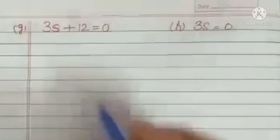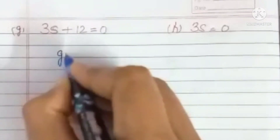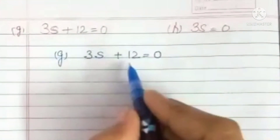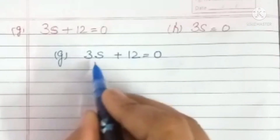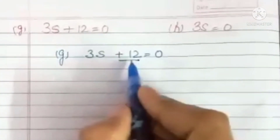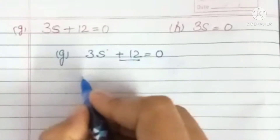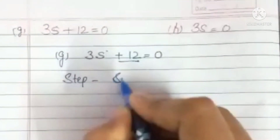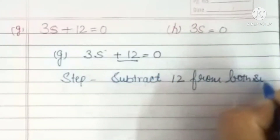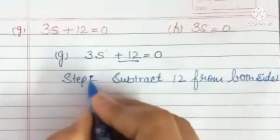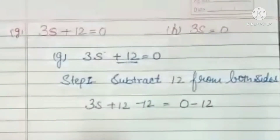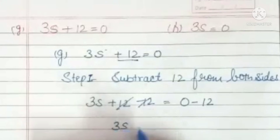Our next part is 3s plus 12 is equal to 0. We need to remove this 3 and this 12. Firstly we will remove this 12, because 12 is added to 3s. So step number 1 is subtract 12 from both sides. So it is 3s plus 12 minus 12, and on the right side 0 minus 12. This 12 and 12 is cancelled, leaving 3s equals 0 minus 12, which is negative 12.